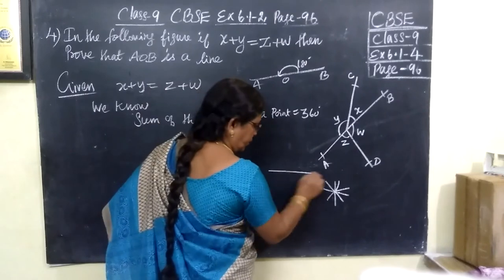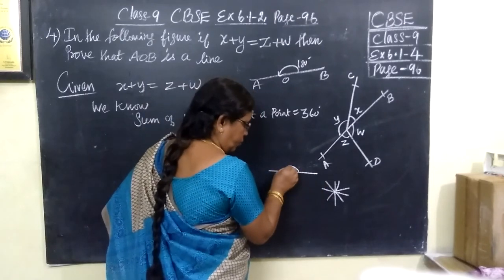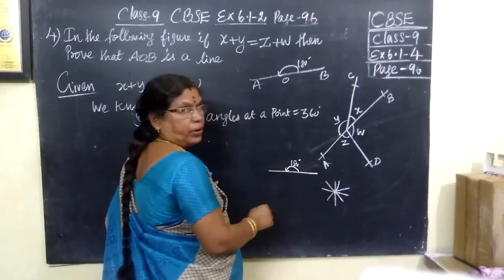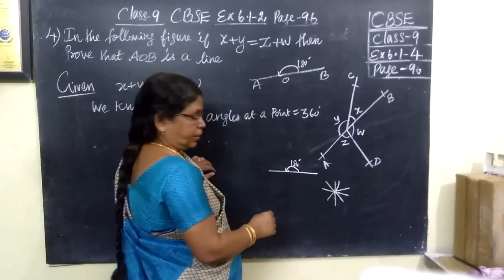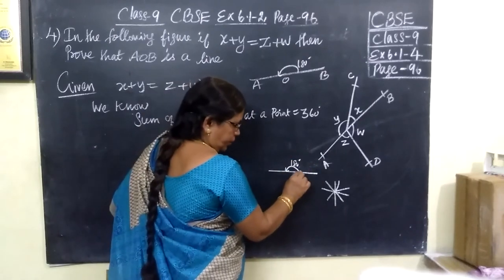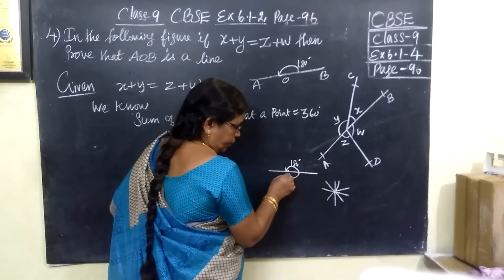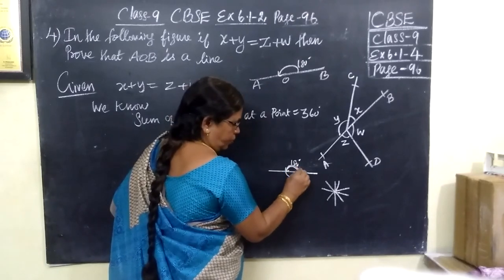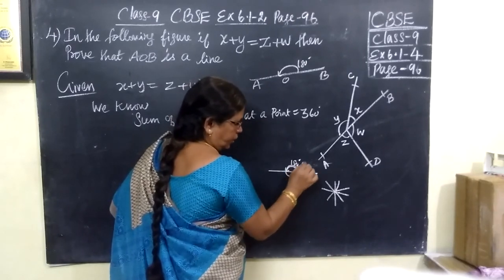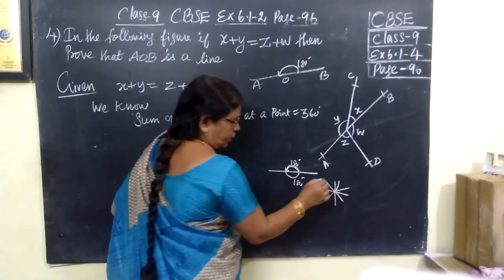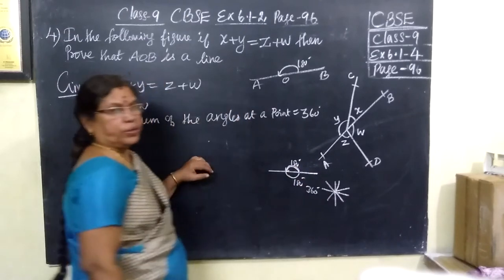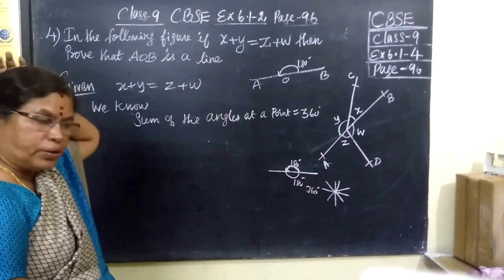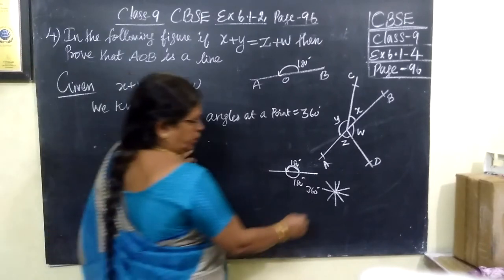Because actually, it is a straight line. This angle is equal to 180 degrees and here also 180 degrees. So if you add totally, you are getting 360 degrees. So, the sum of the angles at a point is equal to 360 degrees.